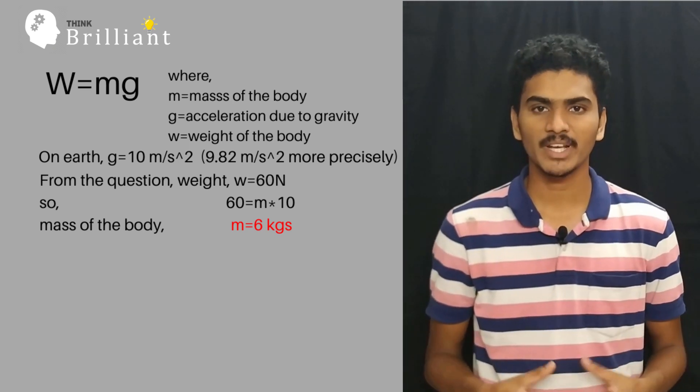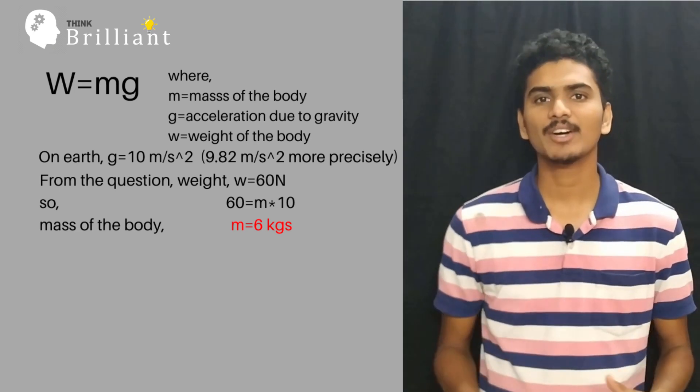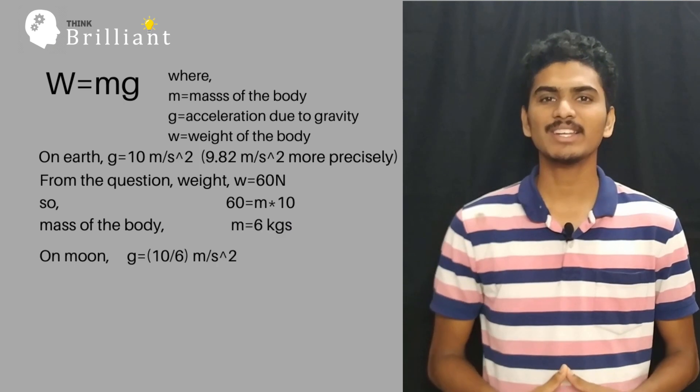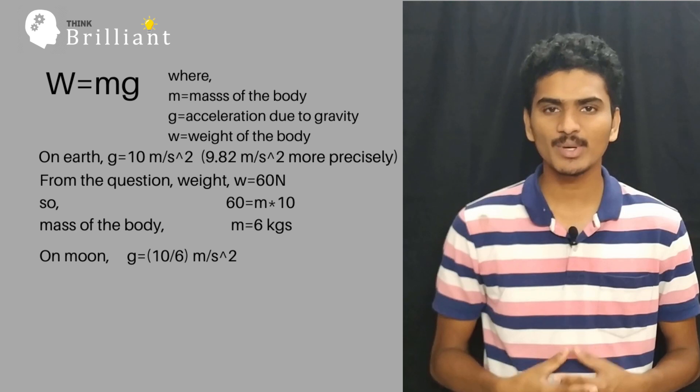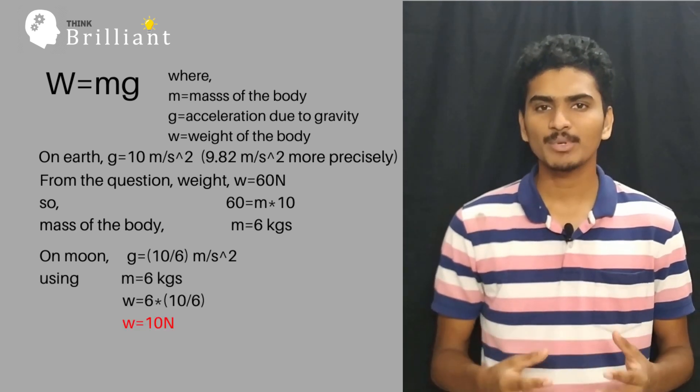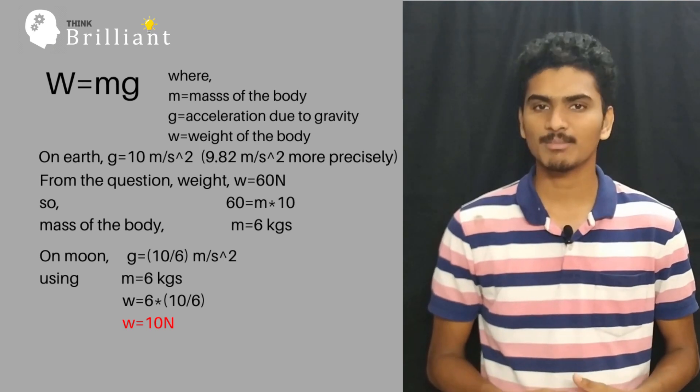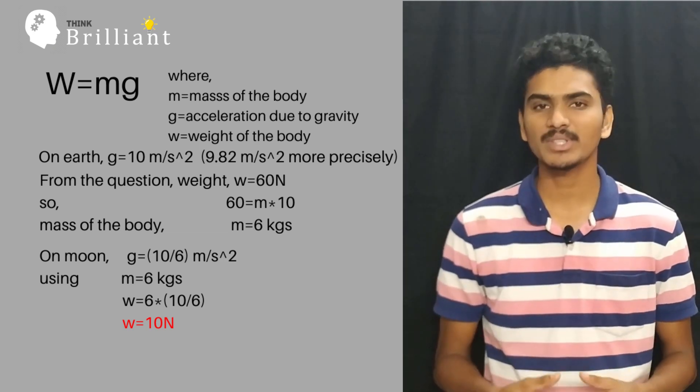And now moving on to the Moon, the value of g is 6 times lesser than the value on Earth, so I take it as 10/6 m/s². Putting the value of g along with mass 6 kgs, we get weight W = 10 Newton.